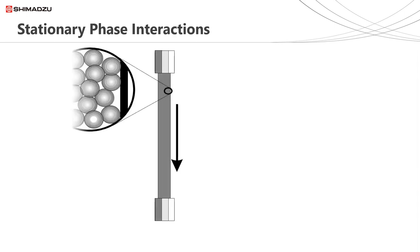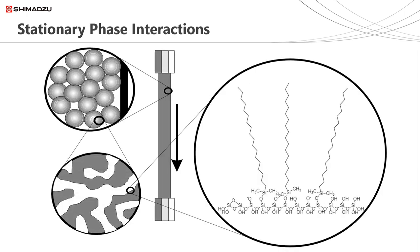Let's have a look at the types of interactions we can expect between analytes and the stationary phase in reversed-phase HPLC. In any separation, we almost never get a pure single mode of interaction. In reversed-phase, any separation will be dictated by a mixture of hydrophobic interactions, polar interactions and ionic interactions. Hydrophobic is the major interaction — these are weak transient interactions between the non-polar stationary phase and the analytes.